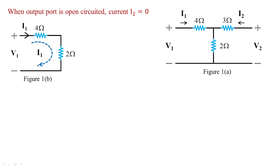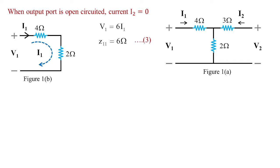Once the current flows into the circuit, 4 and 2 ohms in series give 6 ohms, so v1 = 6·i1. Therefore z11, which equals v1/i1, gives us the input impedance when the output port is open-circuited. The z11 value is 6 ohms.